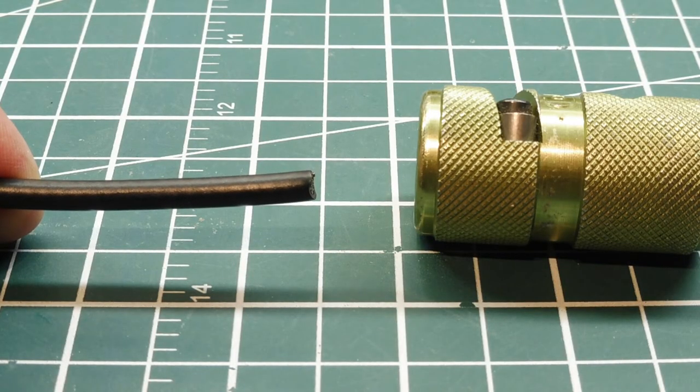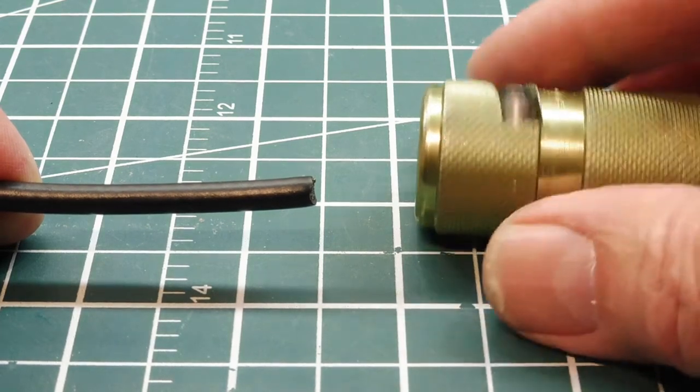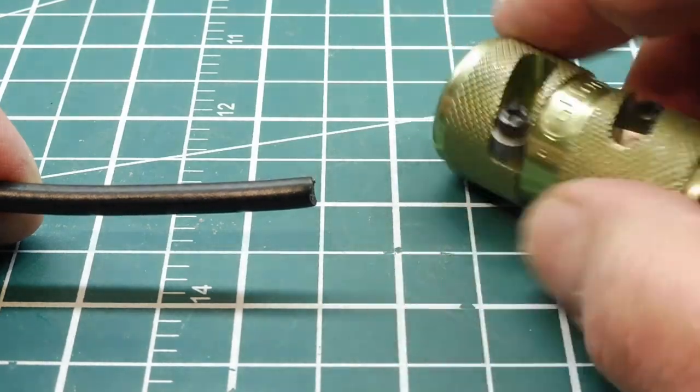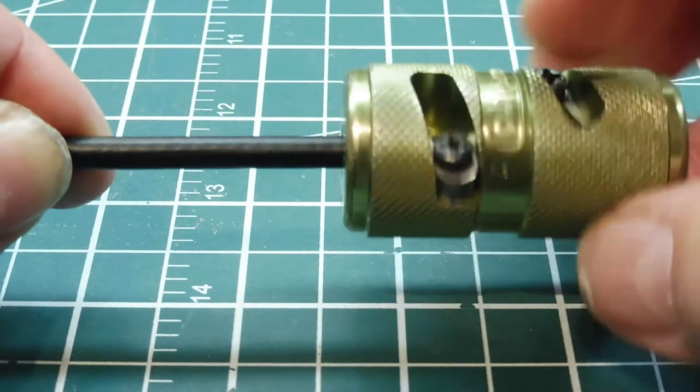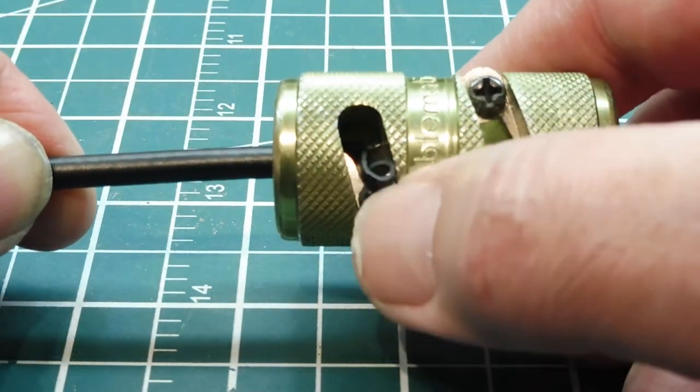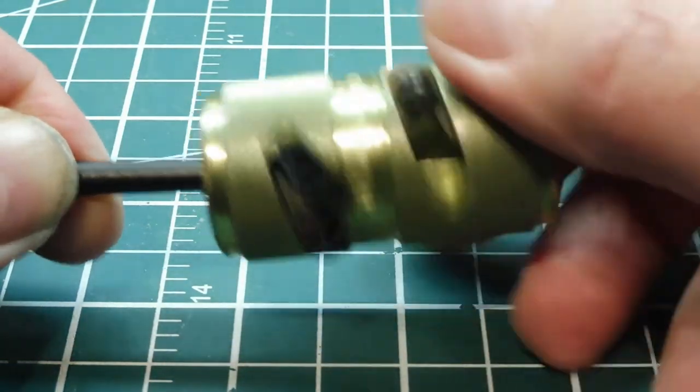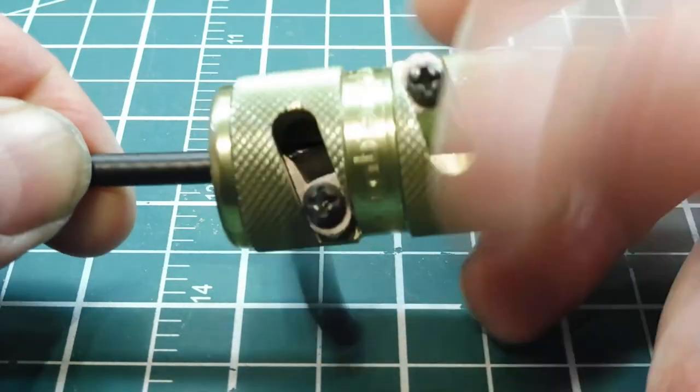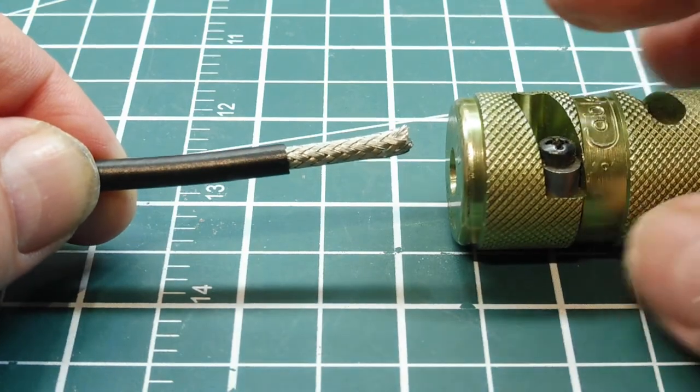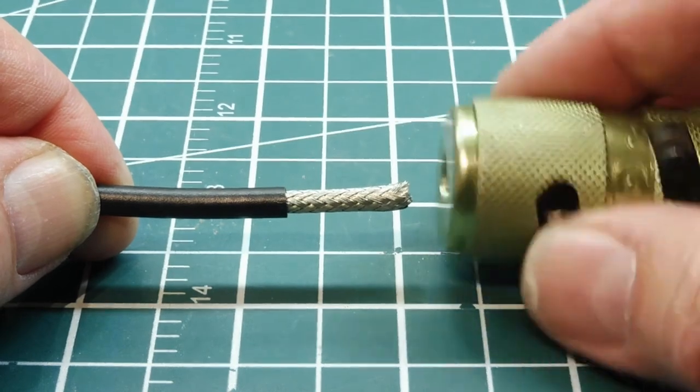Next we're going to look at stripping coaxial cable. I have some RG58 coax cable, and this is my stripper here. It has two sides: your first cut on one side and your second cut on the other side. It's kind of like a pencil sharpener. You insert the cable in and turn, and that's going to take out the outer sheath. You just keep turning until you feel it stop, and that's taken off the outer sheath. Now you just turn this around to do the braid and the center conductor.